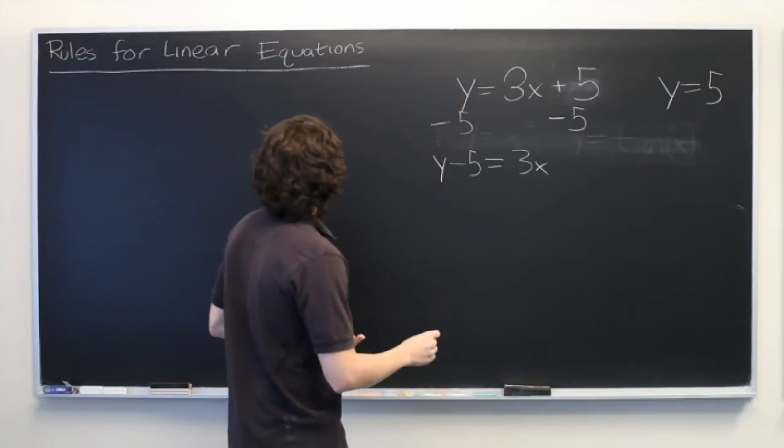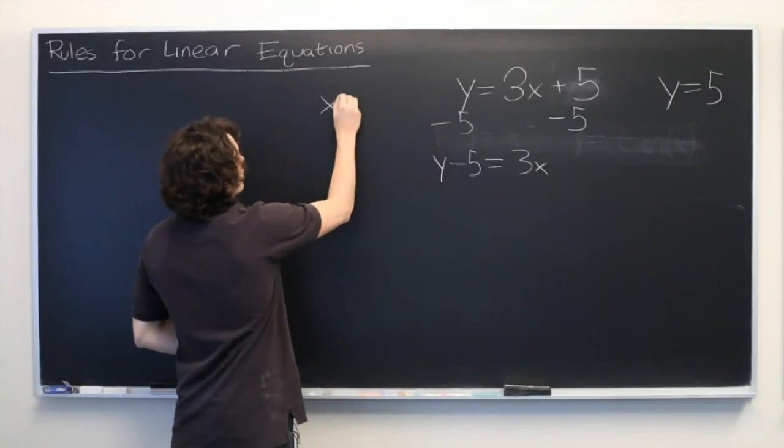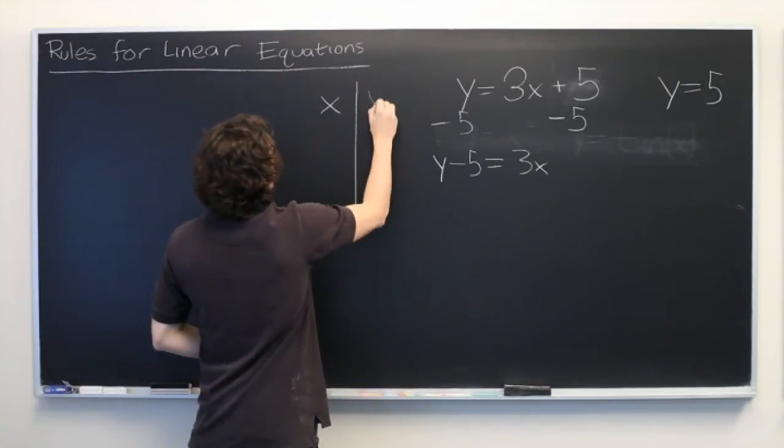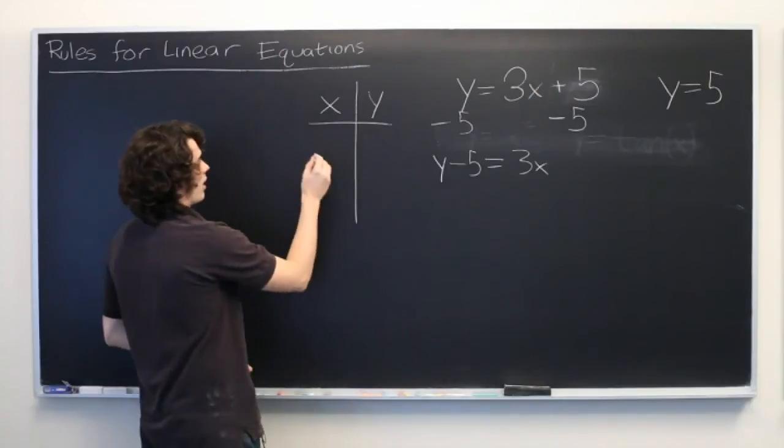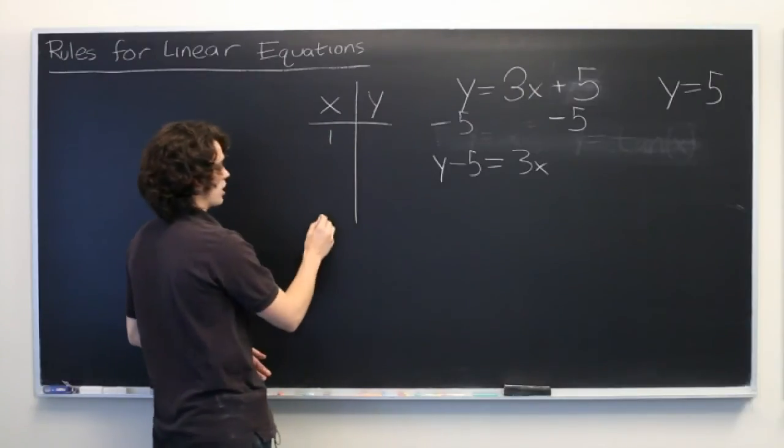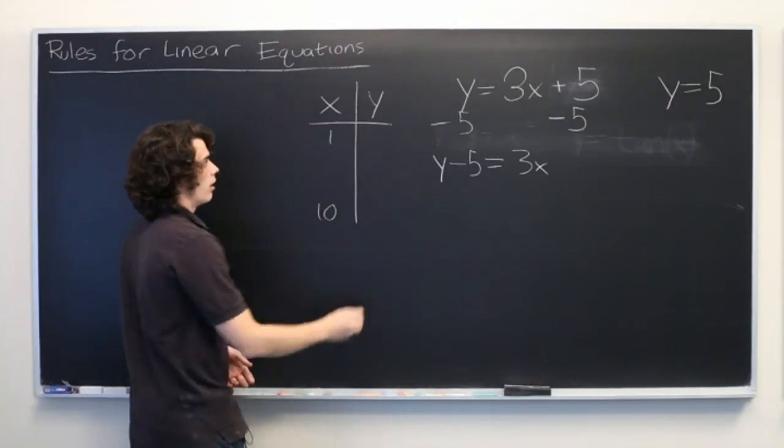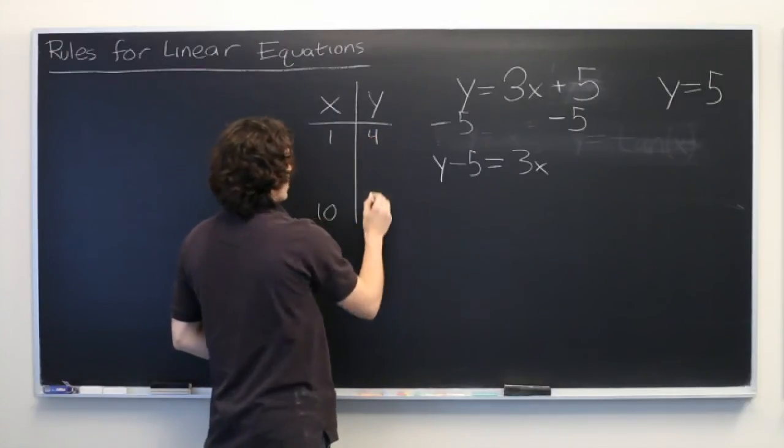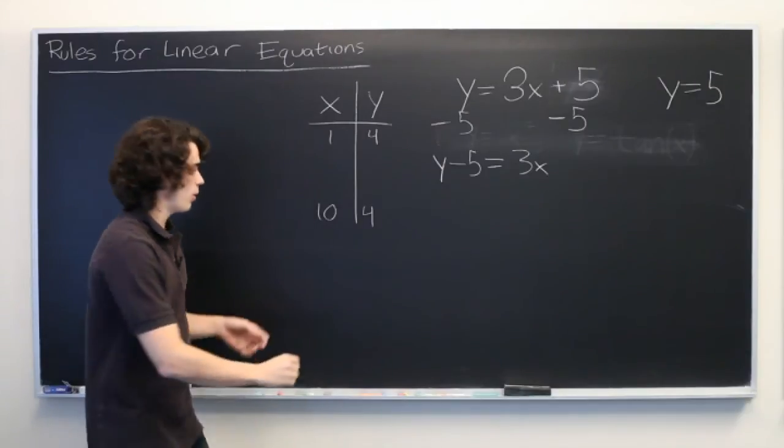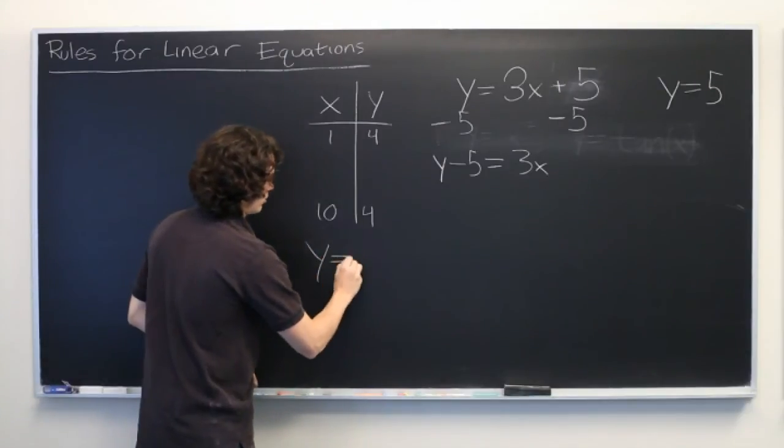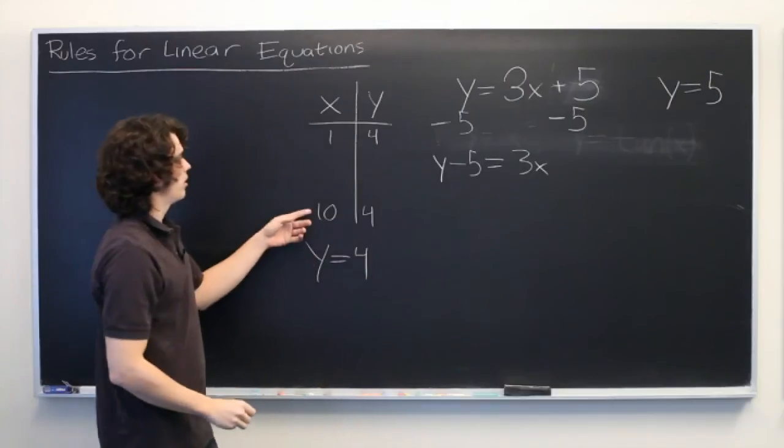So, what this means is that let's say you're creating a table of values. You plug in some value, say 1, you plug in some other value, let's say 10. Let's say that for both of these you get an output of 4. Unless the equation is y equals 4, this can't happen.